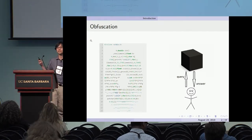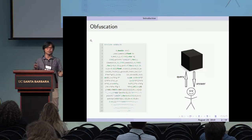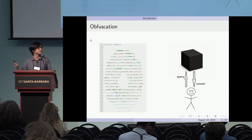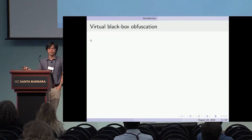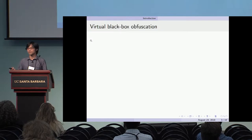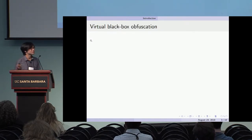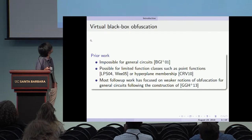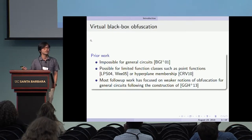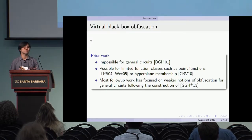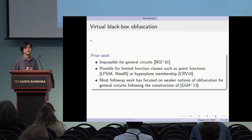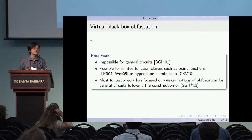If you could do this for any arbitrary fixed function, this is the standard notion of virtual black box obfuscation. Unfortunately — or fortunately, depending on your perspective — this is not possible in general for all circuits, but it is still possible for some limited function classes such as point functions.